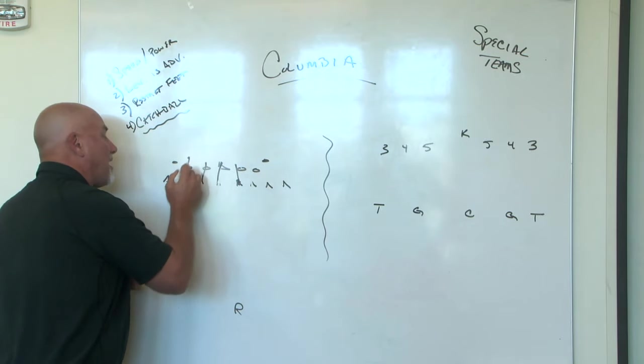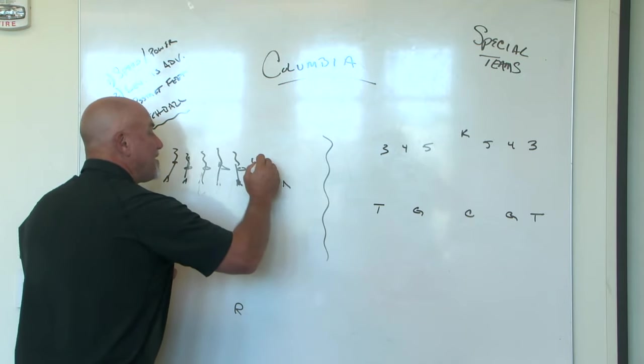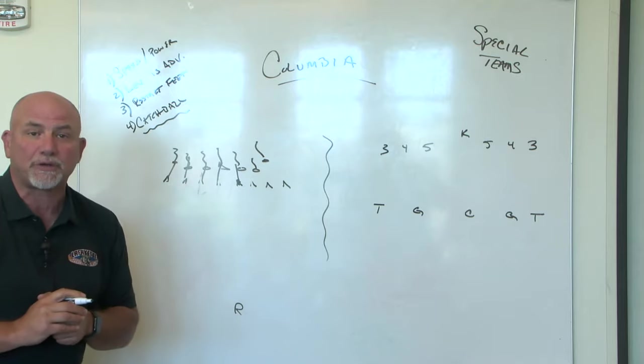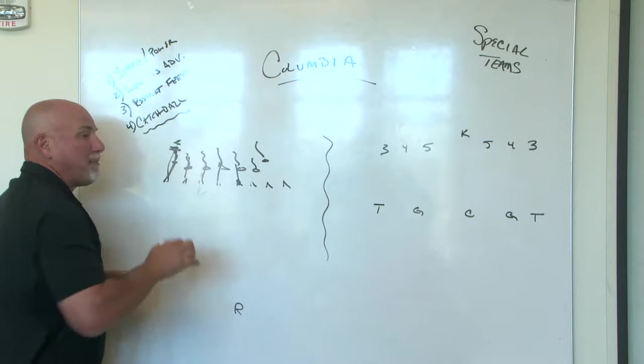So we want to bring pressure up the field so that these blockers have to retreat. And when they retreat, we get them two to three yards in the backfield. At that point, when they settle, then we convert from speed to power.